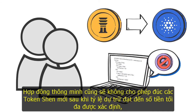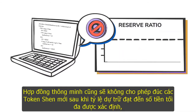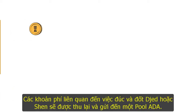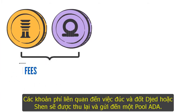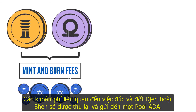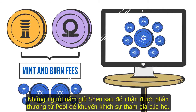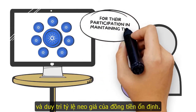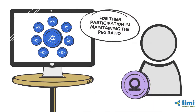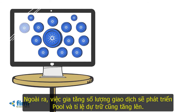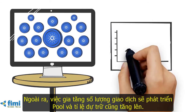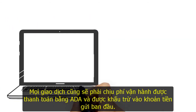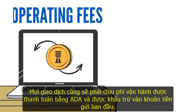This is because Djed holders have priority to redeem their stablecoins for ADA. The smart contract also won't allow the minting of new Shen tokens once the reserve ratio reaches the maximum amount defined, in order to avoid diluting rewards to Shen holders. The fees associated with minting and burning Djed and Shen will be collected and sent to an ADA pool. Shen holders then get a share of this pool as an incentive for their participation in maintaining the stablecoin peg ratio. As the pool grows from transactions, the reserve also grows, which increases liquidity and the price of the reserve coin.